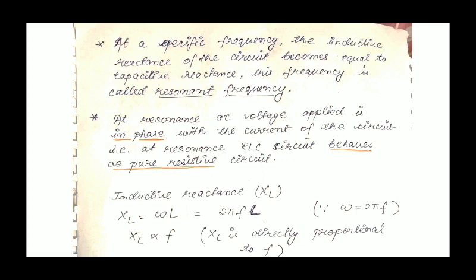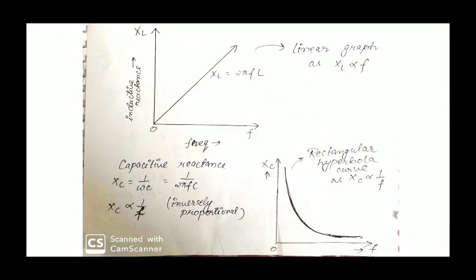Inductive reactance XL is given as XL equals ωL, where ω is the angular frequency given by ω equals 2πF. So XL equals 2πFL, which implies that XL is directly proportional to frequency. If we plot the graph between XL and frequency, with XL on the y-axis and frequency on the x-axis, we get a linear curve since XL is directly proportional to frequency.